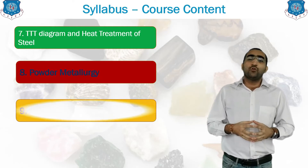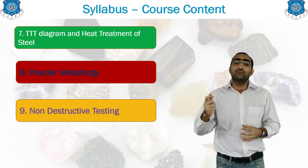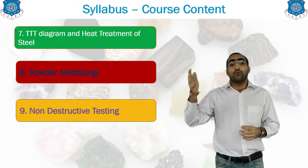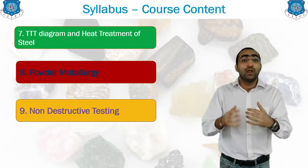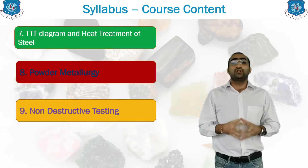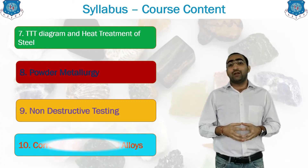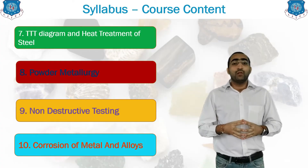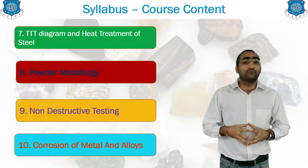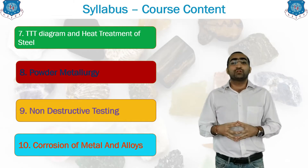The ninth unit consists of non-destructive testing. Non-destructive testing is that type of testing in which we test the material without any damage. We will see different methods, how they are carried out, and on which things we apply these non-destructive testing methods. The last unit of the syllabus is about the corrosion of metal and alloy. Corrosion is one of the major problems the world is facing — how corrosion occurs and the different types of corrosion are included in this chapter.